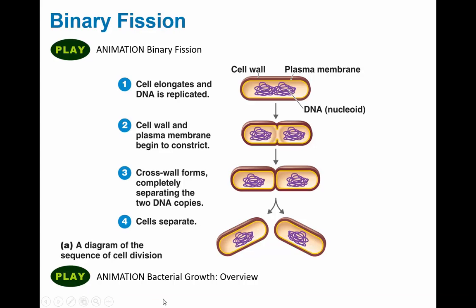So that is the process of binary fission. It's common in bacteria and in some other microbes, but not all. It's not common in fungi, and it can be common for things like algae, but not usually for protozoa. So this is basically a bacterial way of duplicating itself, and it's a really fast process.